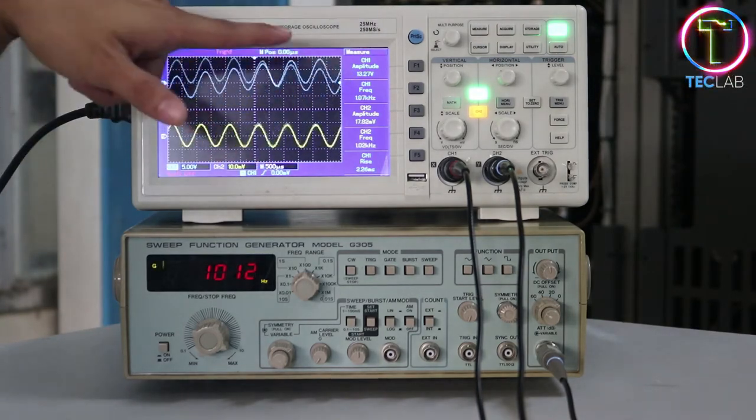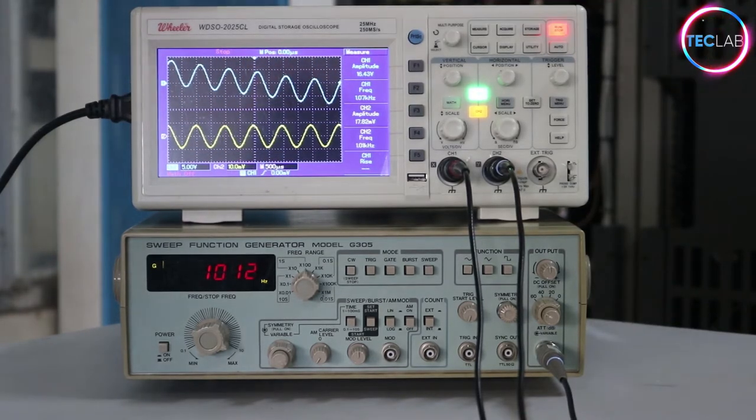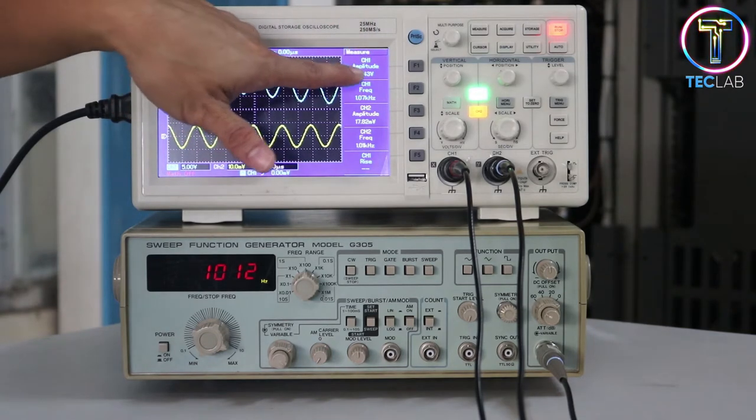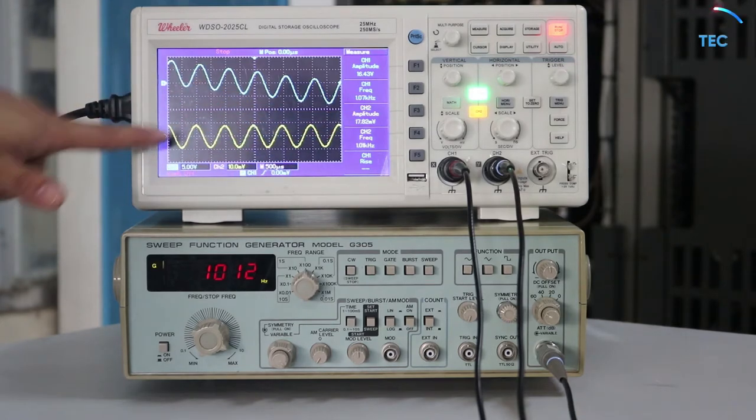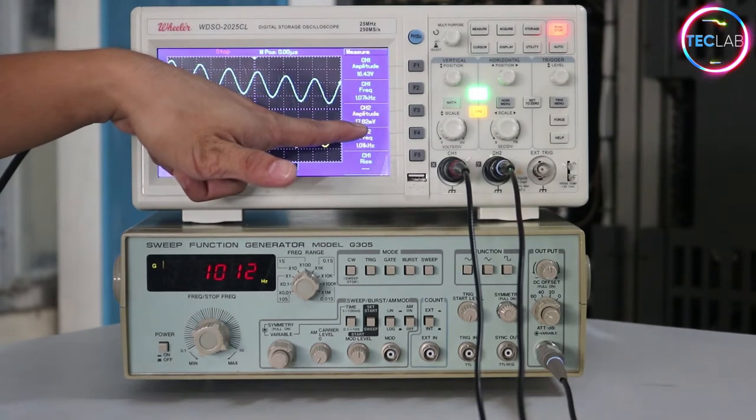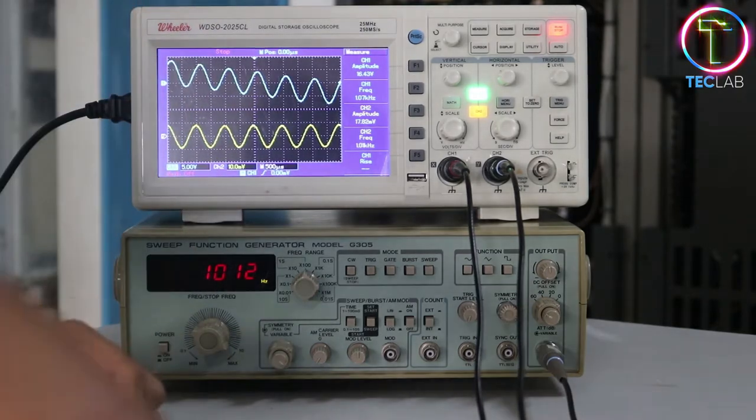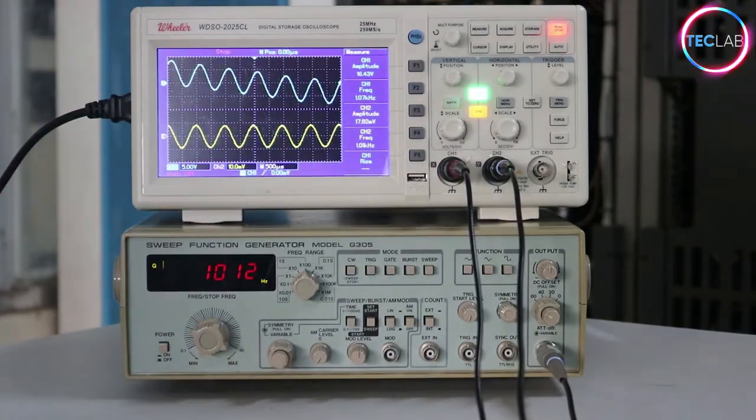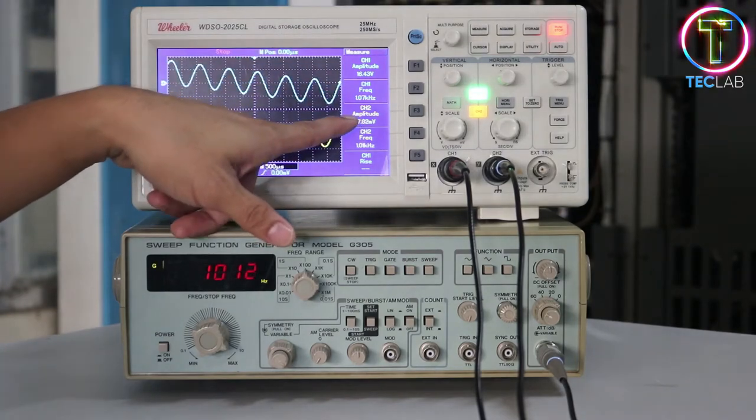on the first channel, we have an input of 14.27 volts, at least. So let's stop the signal. So we have here an amplitude of 16.43 volts on the first channel. On the second channel, you have only 17.82 millivolts. Why? Because there is an attenuation on your transmission line. So that's why there is a signal drop or a voltage drop on your channel 2.